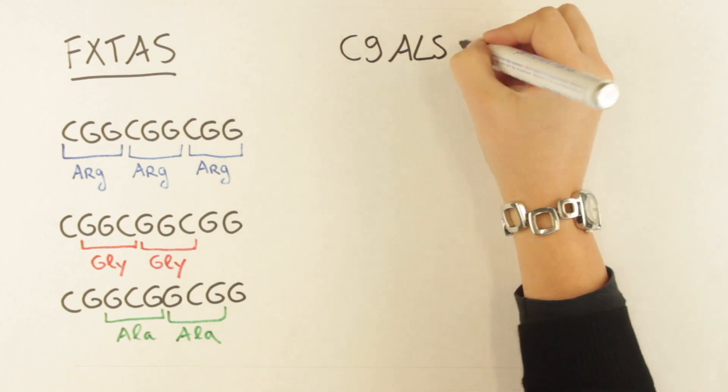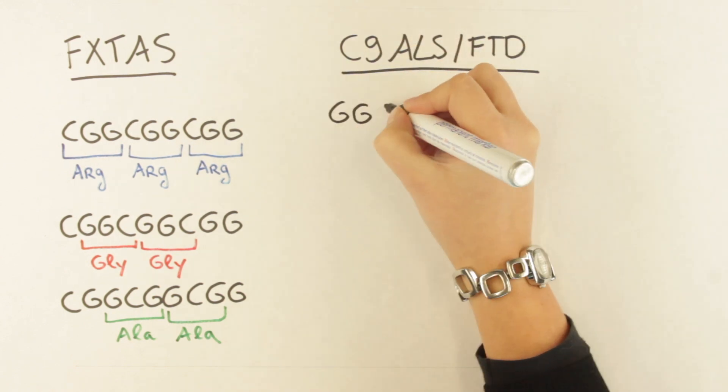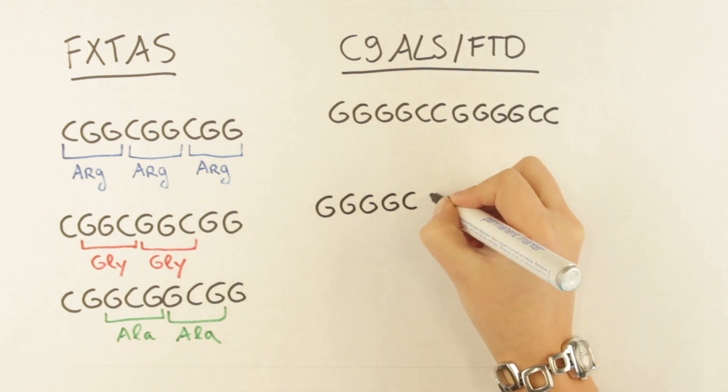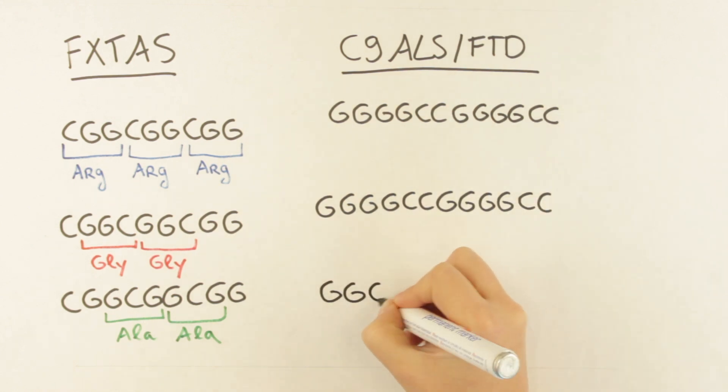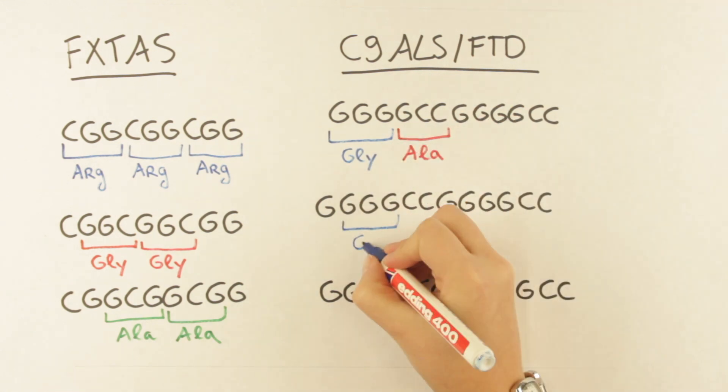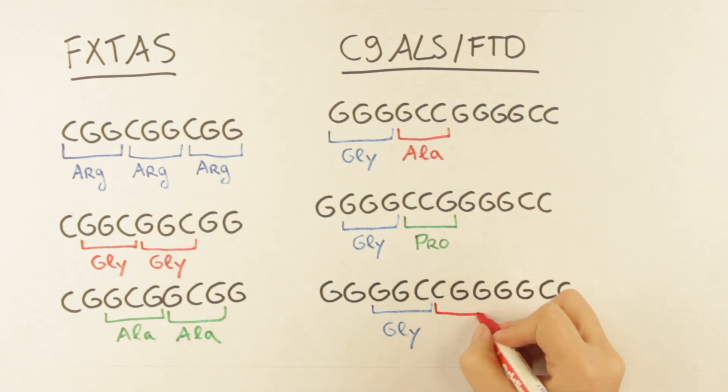In case of the hexanucleotide G4C2 for C9 ORF-ALS-FTD, RAN translation can result in several dipeptides: glycine-alanine, glycine-proline, and glycine-arginine.